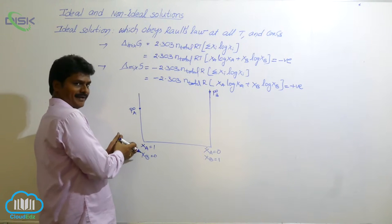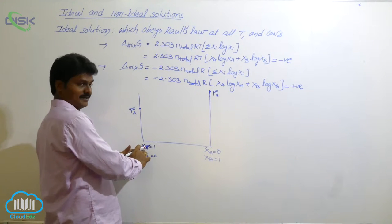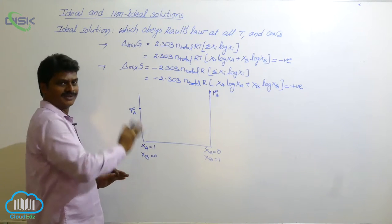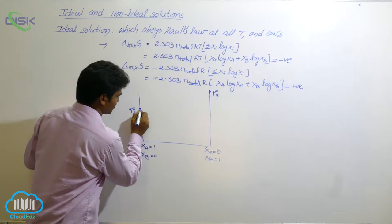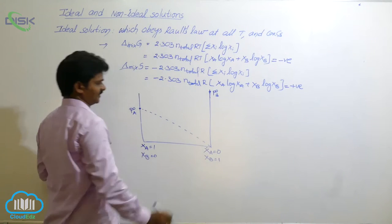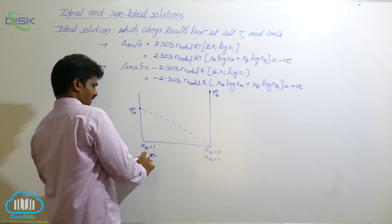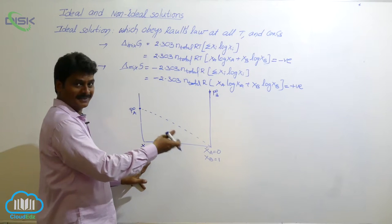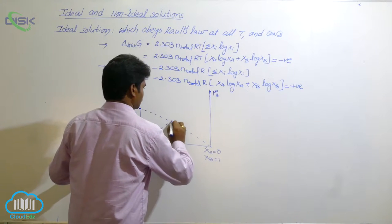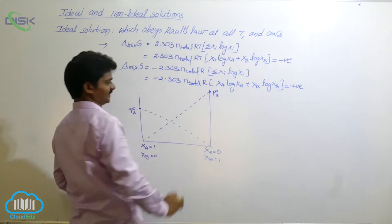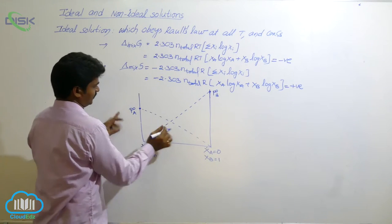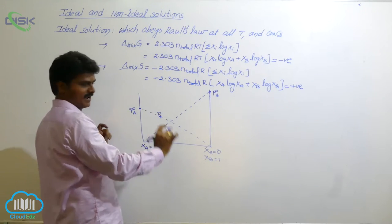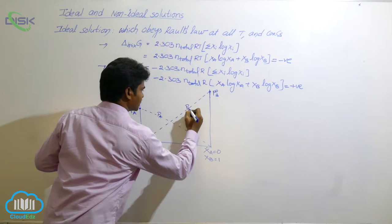When the composition of XA — the composition of A in the mixture — decreases, the partial pressure of A also decreases. It forms a straight line. Similarly, from left to right there is an increase in the composition of B, so the pressure of B increases. The first line is PA — partial pressure of A. This is PB — partial pressure of B.